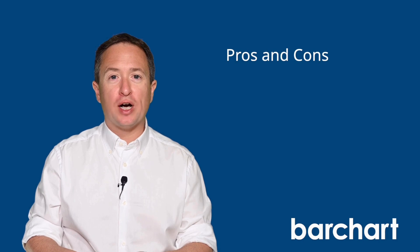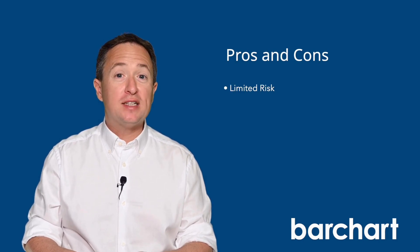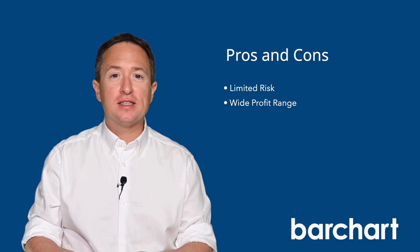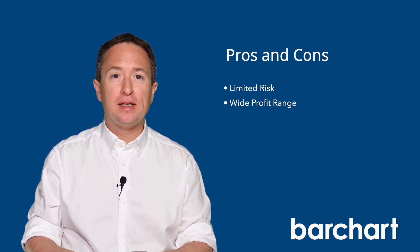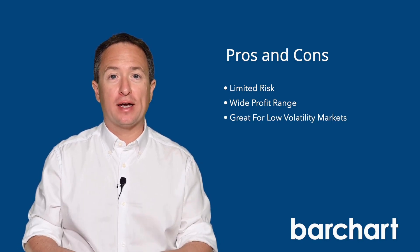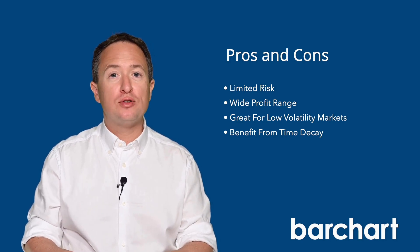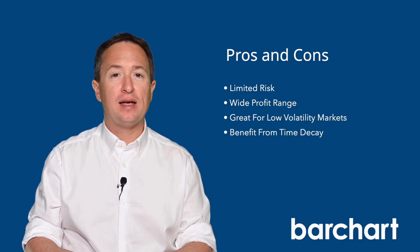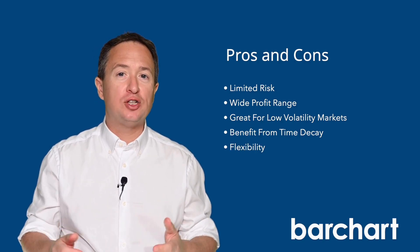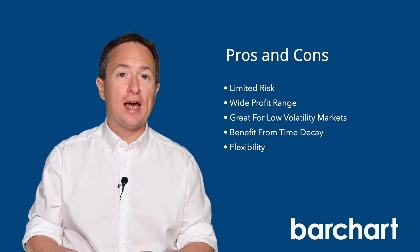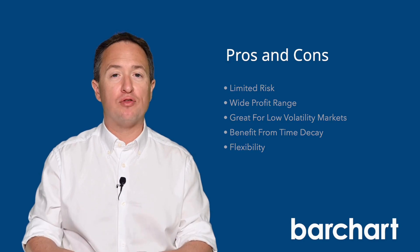One of the biggest advantages of a short iron condor is its limited risk, which makes it a favorite among many traders. The profit range can also be quite broad, making the chances of profit better than many trades. However, maximum profits are capped. And due to its natural bias, short iron condors are great in low volatility markets. The strategy also hugely benefits from time decay or theta decay, since options lose their value as they approach expiration. Lastly, flexibility is one of the most underrated benefits, as you can adjust the trade by rolling the strikes or the expiration dates to manage risks and improve profitability.